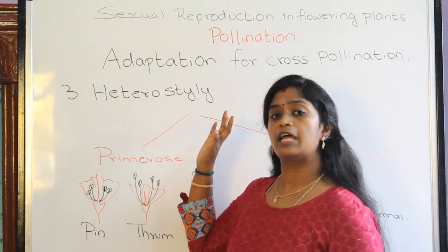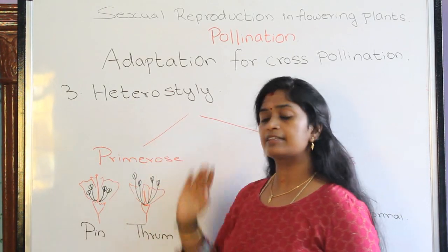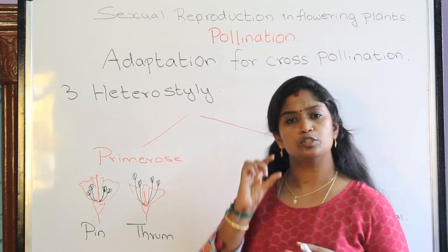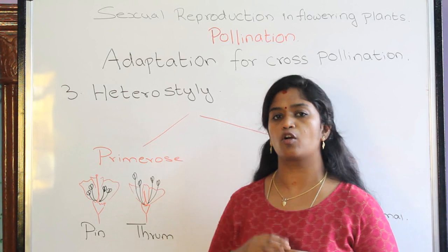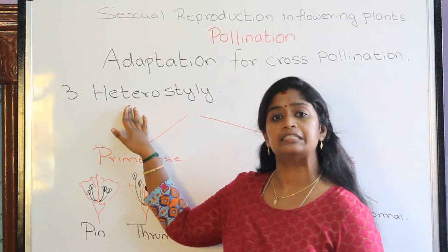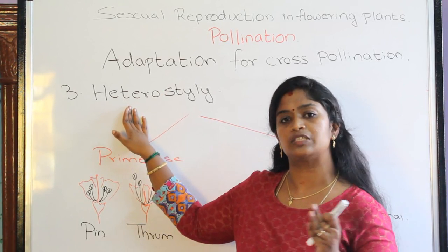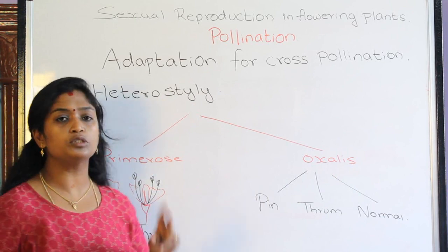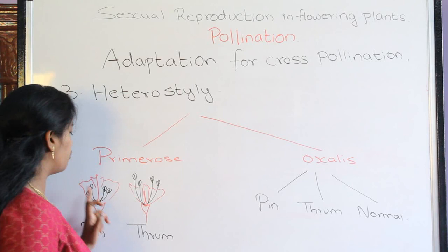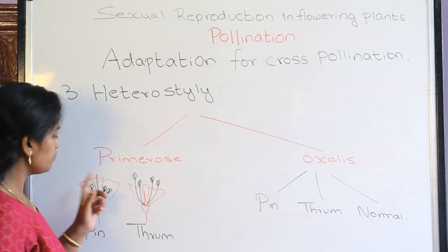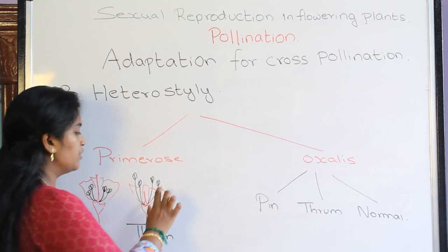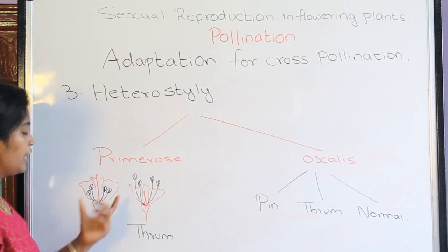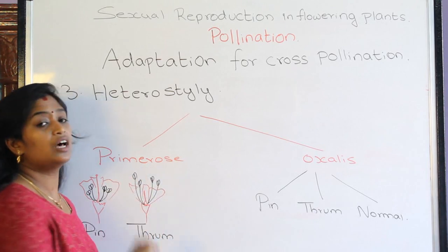The third adaptation of cross-pollination is called heterostyly. In this condition, flowers produce two different types of filament and style. Some flowers will produce short filament with long style; some will produce short style with long filament. This is otherwise called dimorphic heterostyly. Taking the example of primrose and oxalis: in primrose we have two types of flowers — one with long style and short filament, called pin, and one where the style is short and the filament is long, called thrum.